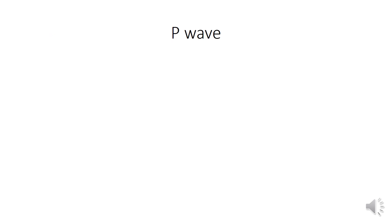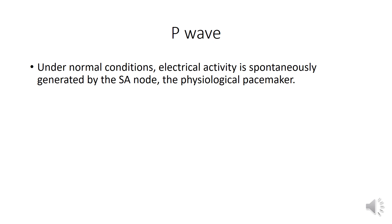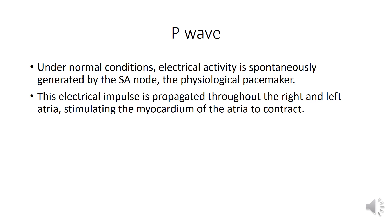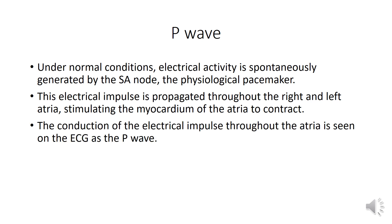Let us discuss about the P wave. Under normal conditions, electrical activity is spontaneously generated by the SA node, the physiological pacemaker. This electrical impulse is propagated throughout the right and left atria, stimulating the myocardium of the atria to contract. The conduction of the electrical impulse throughout the atria is seen on the ECG as the P wave.